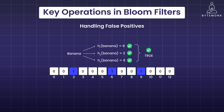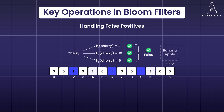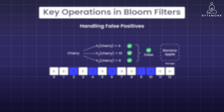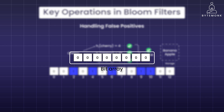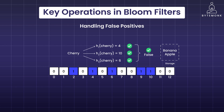One of the inherent characteristics of Bloom filters is the occurrence of false positives, where the filter might incorrectly indicate the presence of an element that isn't actually in the set — as we saw in the case of cherry. This happens due to the overlap of bit positions from different elements being hashed to the same positions. While false negatives are not possible, managing false positives is crucial. The probability of false positives can be adjusted by changing the size of the bit array and the number of hash functions used. Generally, a larger array and more hash functions decrease the likelihood of false positives, but at the cost of increased space and computational overhead.